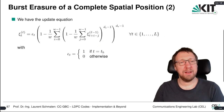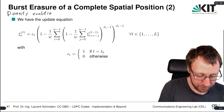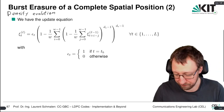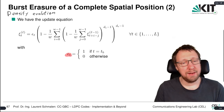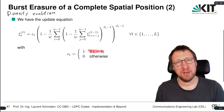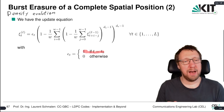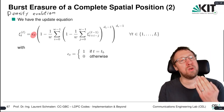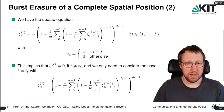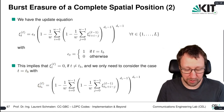To answer this, we first look at the density evolution update equation. We have ε_t equal to one if t is the burst spatial position and zero otherwise. So the spatial position that is erased has ε equal to one, and all others are zero — we already know them. We only need to consider the case t equals t_b, and we have c(t_b, x) equal to one.